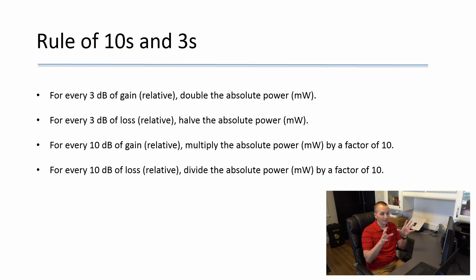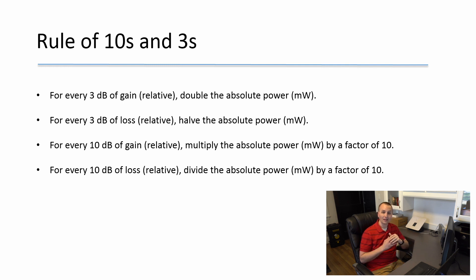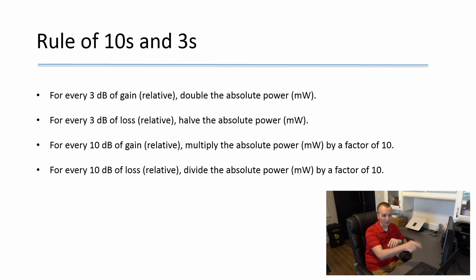Let's go through some verbal examples using the rule of tens and threes. Say we have an access point set to transmit at 100 milliwatts with an internal antenna rated at 3 dBi of passive gain. The EIRP radiating out of that antenna is 200 milliwatts. We started at 100 milliwatts and added 3 dB — according to our rules, adding 3 dB doubles the absolute power — bringing us to 200 milliwatts.